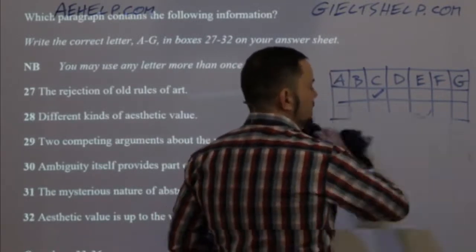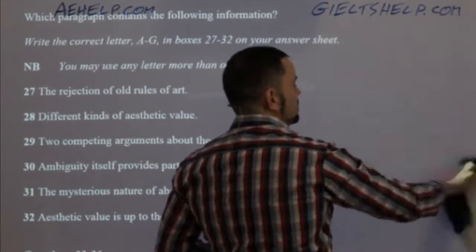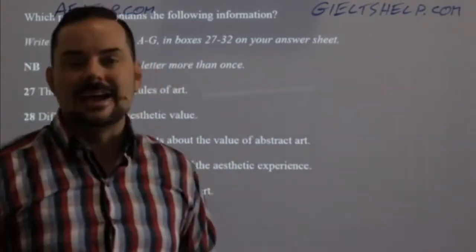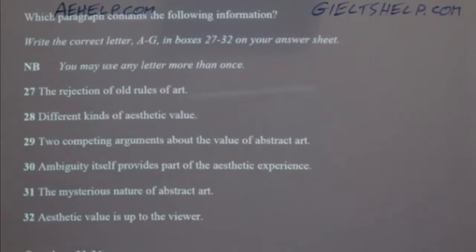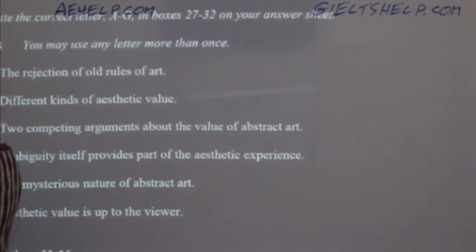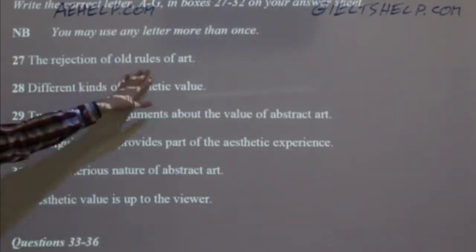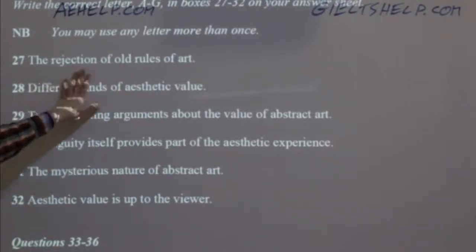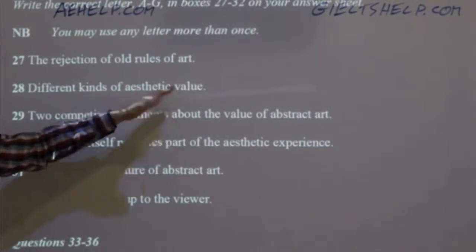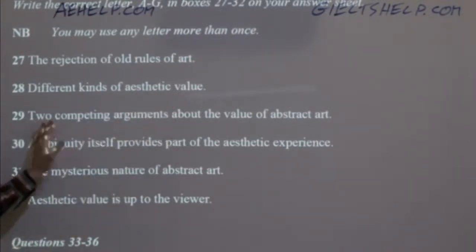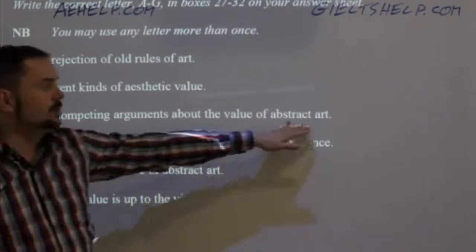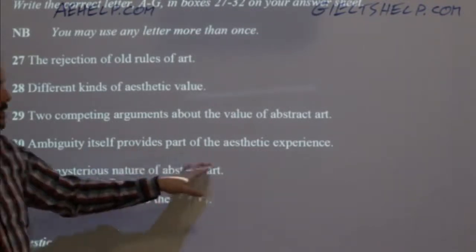When you're getting ready, it's definitely a good idea to read these questions before you read the passage. All of the information is somewhere in the passage, but don't worry about understanding every sentence clearly — just read it, visualize it, paraphrase it if you can at the same time, and then move on. So: the rejection of old rules of art; different kinds of aesthetic value; competing arguments about the value of abstract art; ambiguity itself provides part of the aesthetic experience.